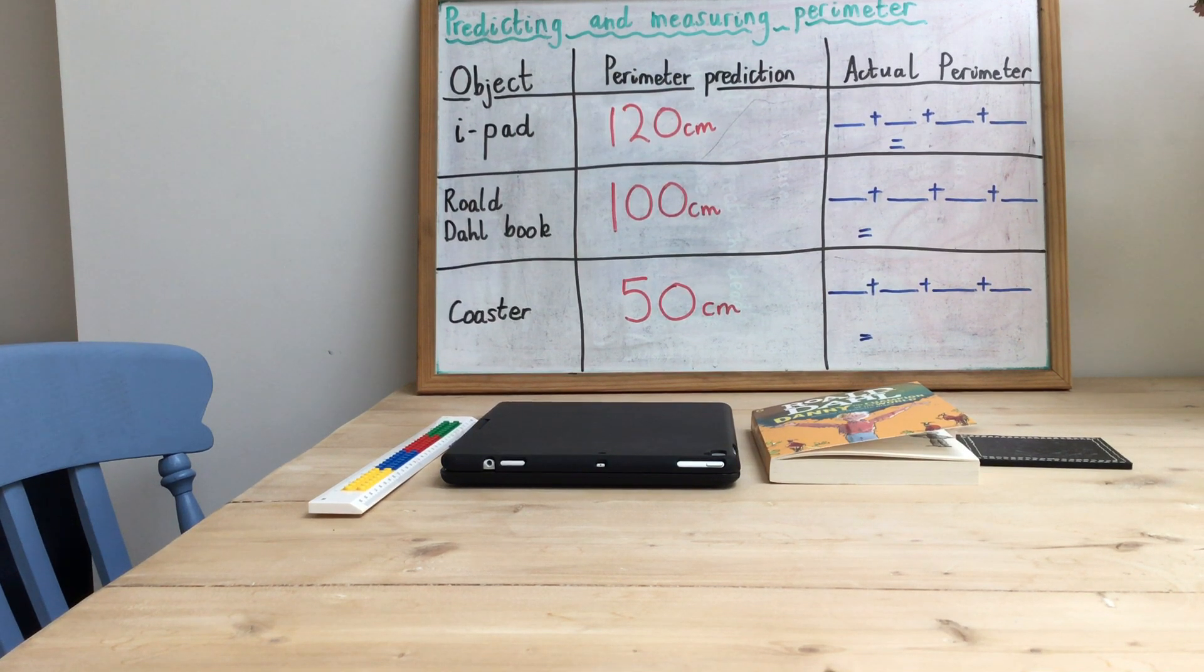So what you can see on the table in front of you are four objects. I've got my ruler, I've got my iPad, I've got my book, and I've got a coaster. These are the things that I'm going to be using to measure with and to decide what I think their perimeter is.